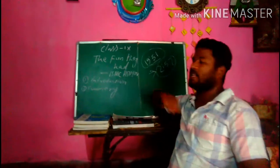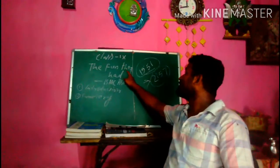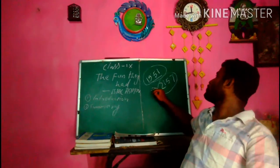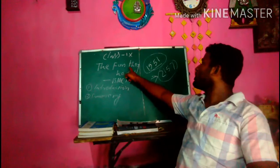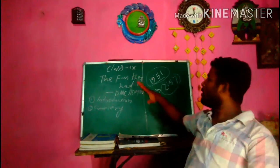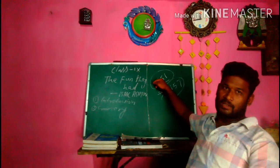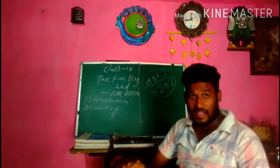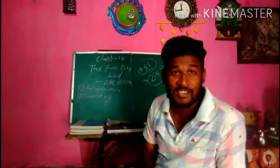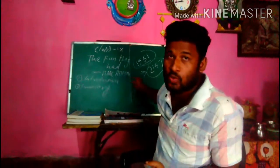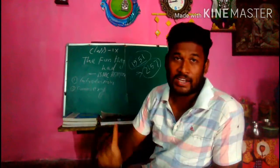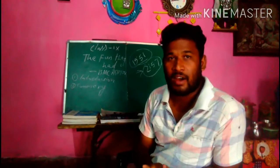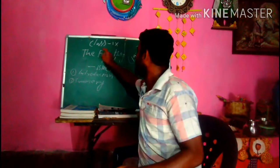Next, let's look at the title: 'The Fun They Had.' What type of fun and who? 'They' suggests the students who studied at the time of 1951 — 200 years earlier from 2157 — that is, the students of the present day. The fun refers to the funny and enjoyable things they used to do: going to school together with friends, having classmates, sharing their study — everything they had fun doing.